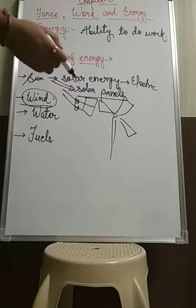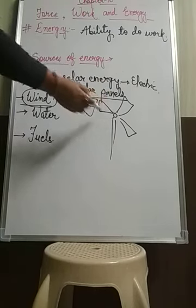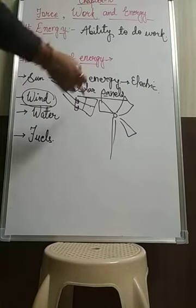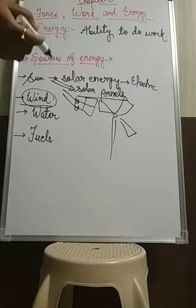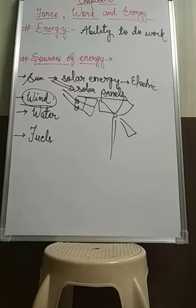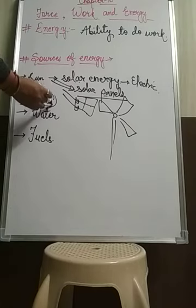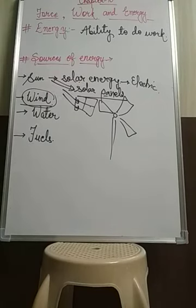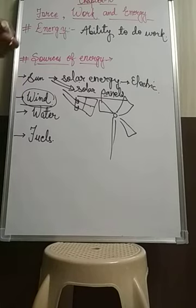When the wind blows, it makes the blades of the windmill turn. The blades start to turn very fast, and this leads to the generation of electricity. So the wind energy converts into electrical energy. Windmills are also used to draw underground water and to grind grains into flour.